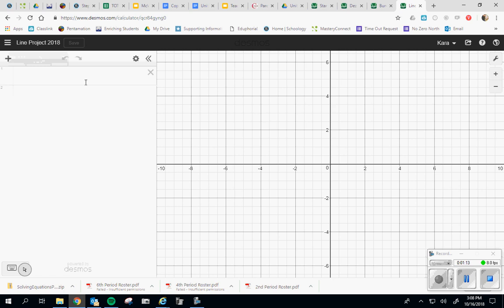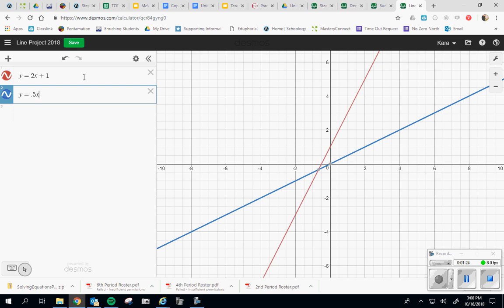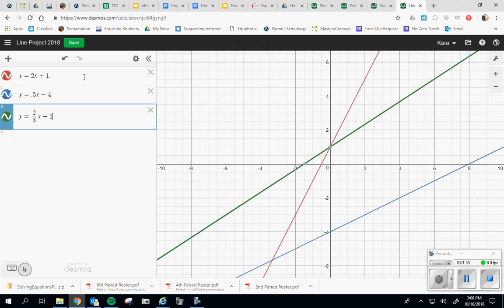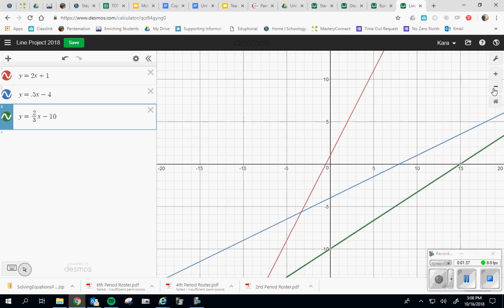Over on the left hand side, as you know, is where we're going to build our equations. So let's say your first few equations are typed in: y equals 2x plus 1, y equals 0.5x minus 4, y equals 2/3x plus 10. I don't know, let's do minus 10. So we have these lines over here.